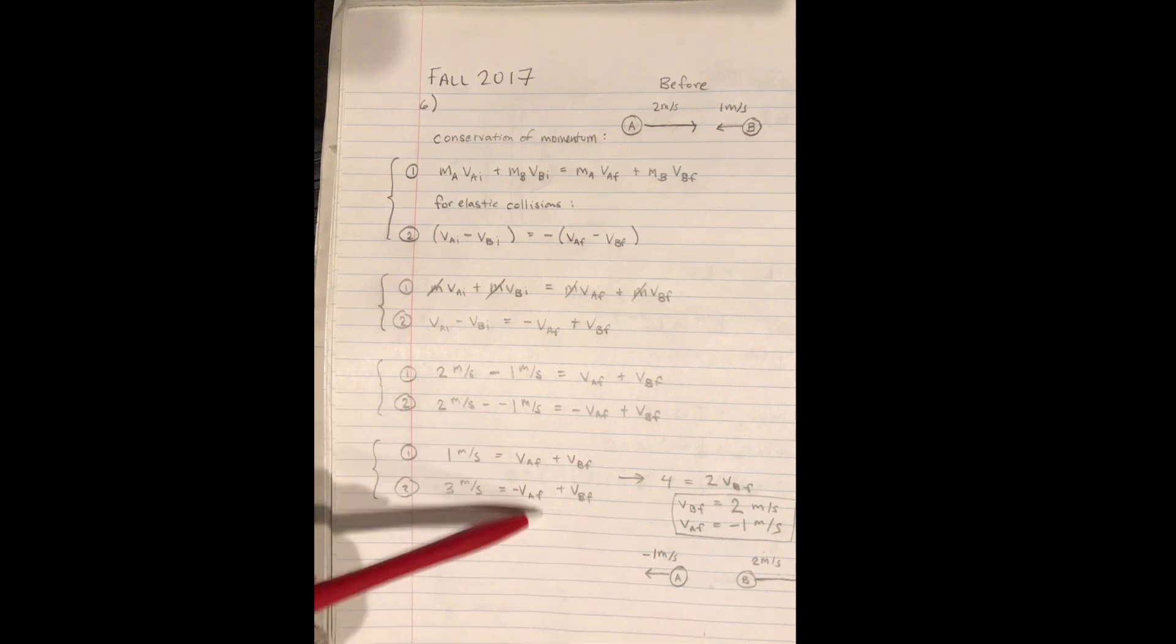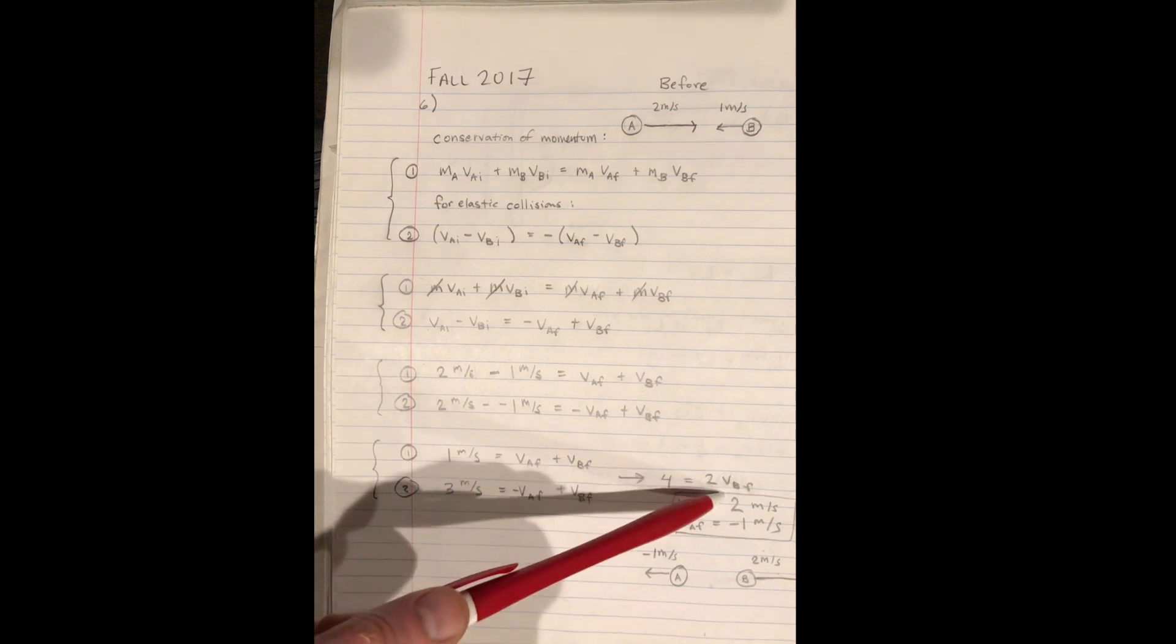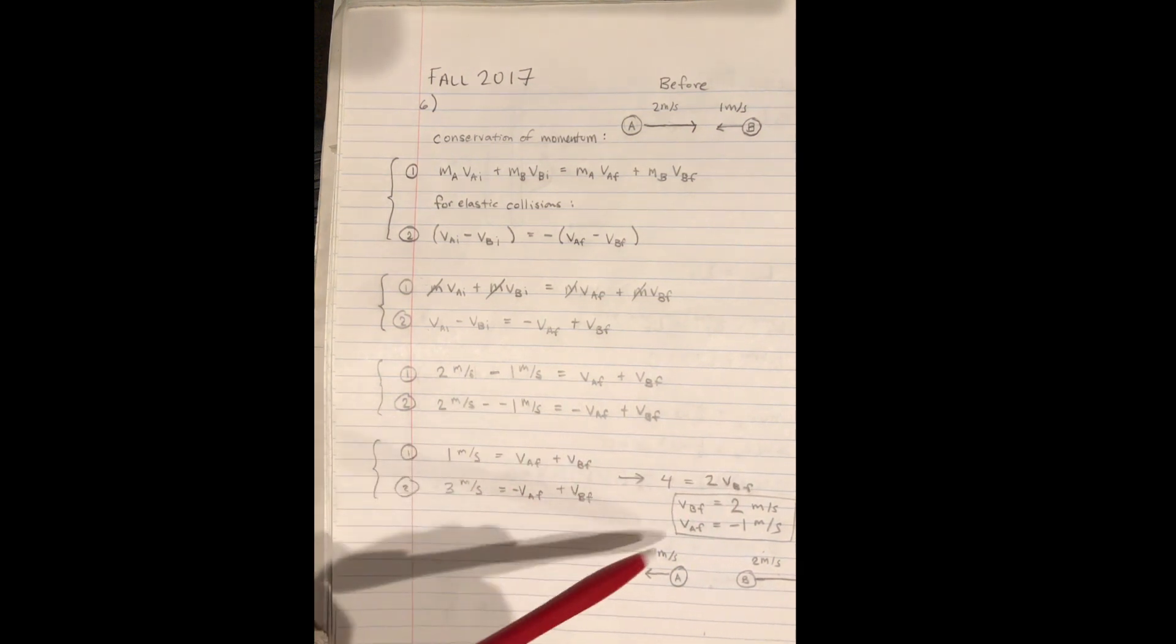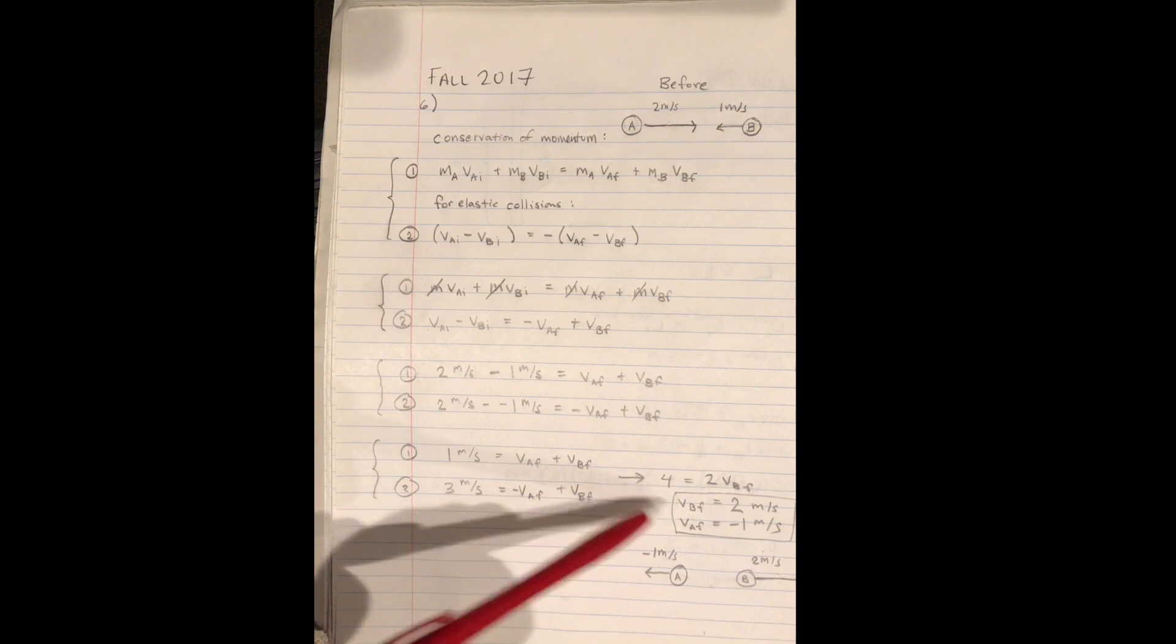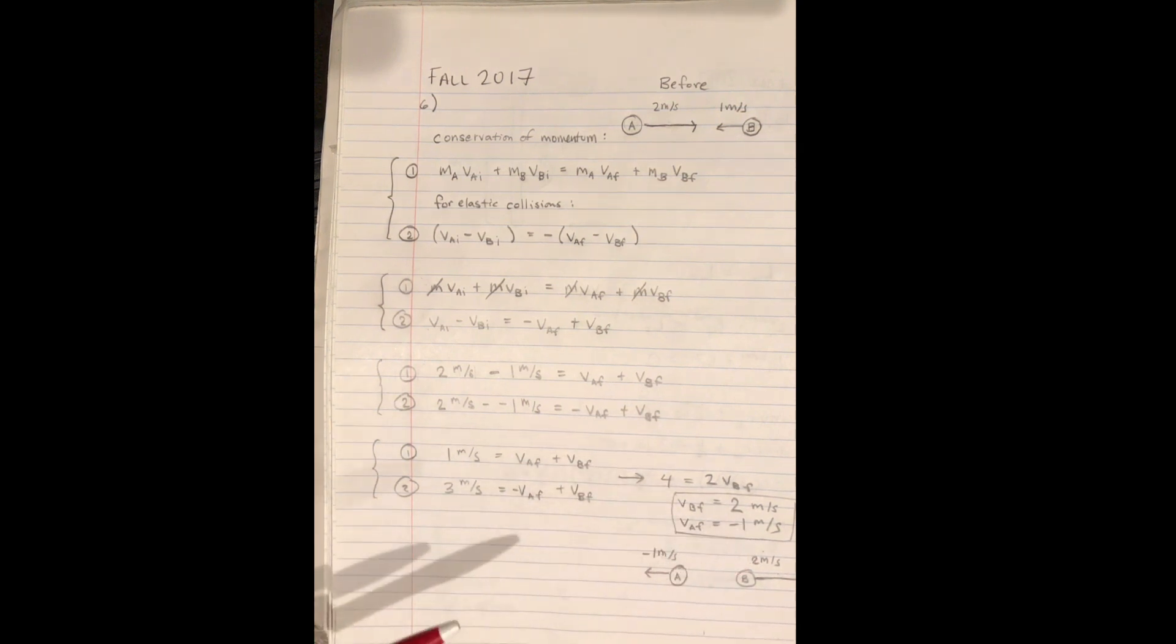If we add these two equations together, we get that two VBF equals four. We're just solving this system of equations. And then if we plug the value of VBF back in, we see that VAF is negative one meters per second.